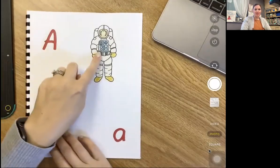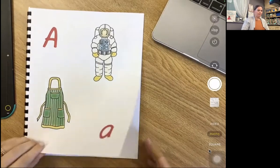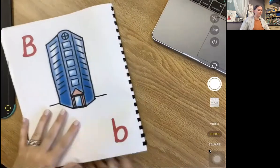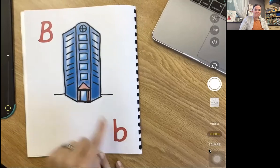A, A, astronaut. A, A, apron. B, buh, building. B, buh, building.